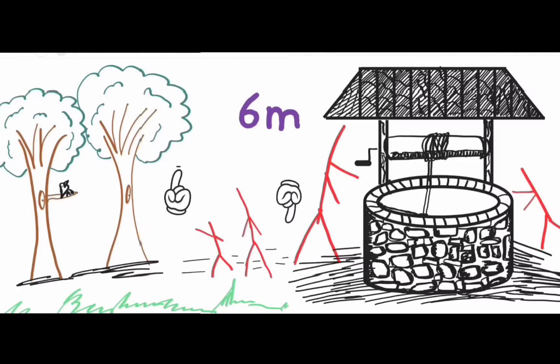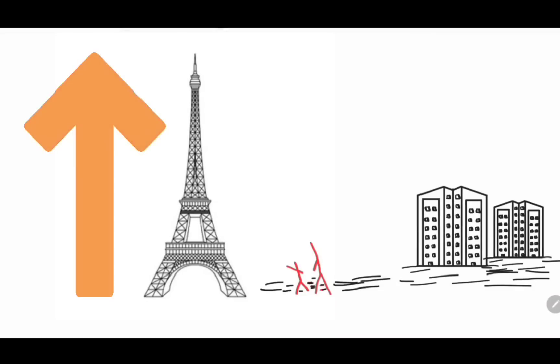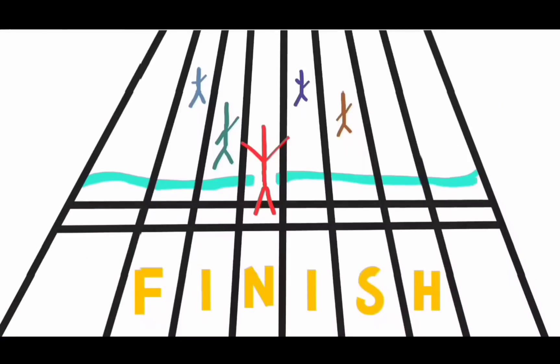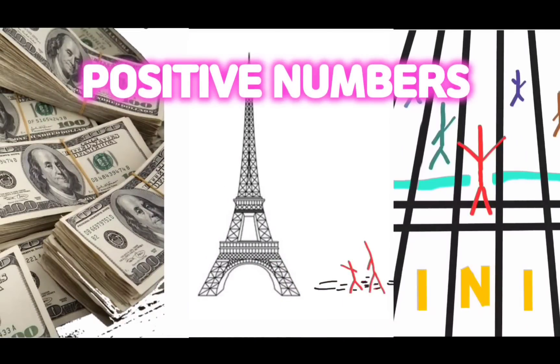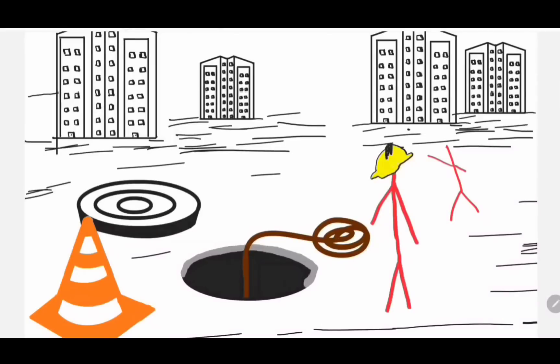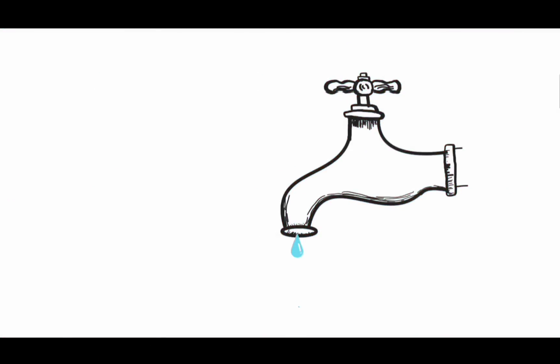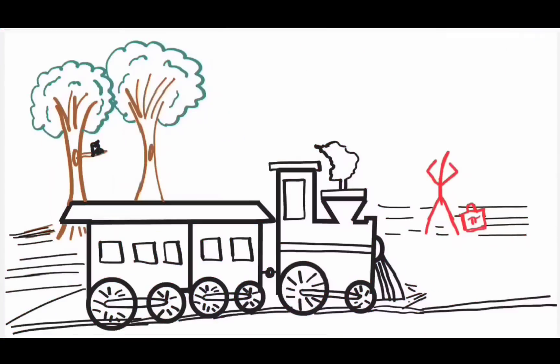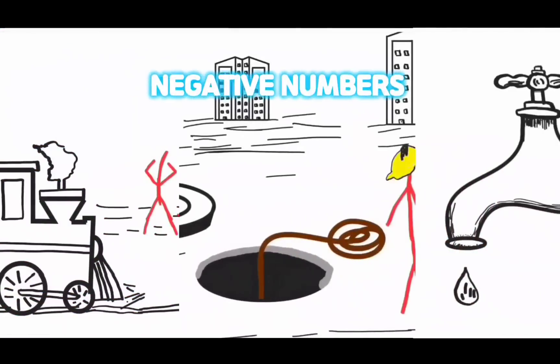That's why whatever naturally appear like height, much, fast, consider them as positive numbers. Whereas depth, little, late, consider them as negative numbers.